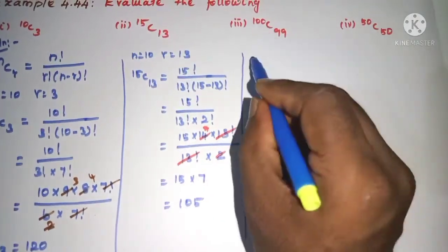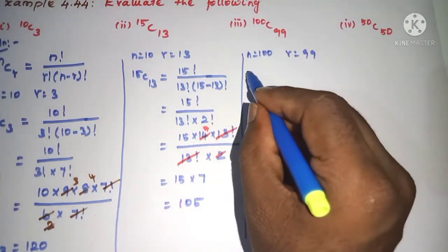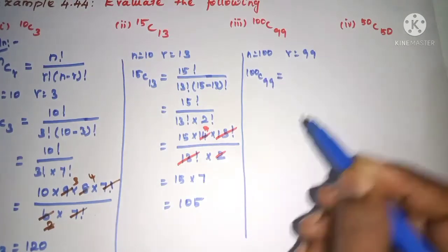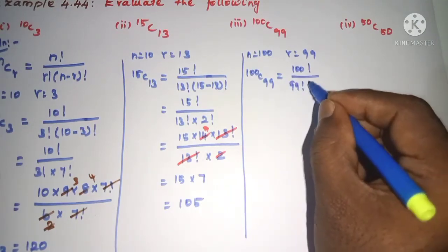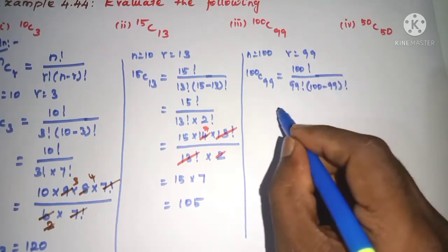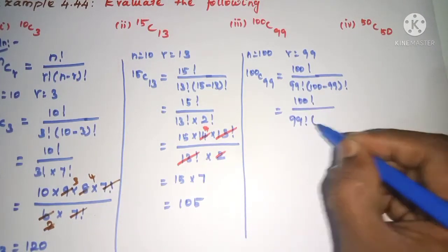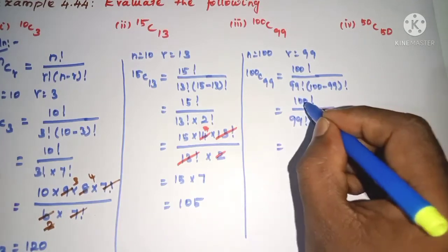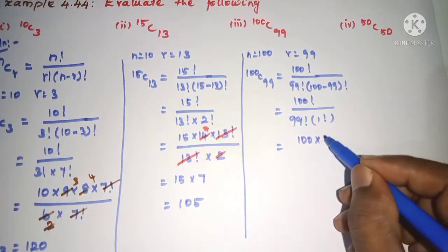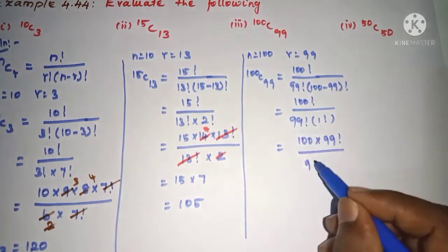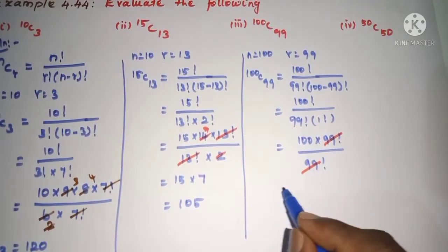Sub-question 3: n is equal to 100, r is equal to 99. 100C99 is equal to 100 factorial divided by 99 factorial into 100 minus 99 factorial. Now, 100 factorial as it is divided by 99 factorial into 1 factorial. In the numerator, 100 factorial becomes 100 into 99 factorial, equal to 99 factorial. So 1 factorial is 1, and 99 factorial will cancel. Remaining, we get 100.